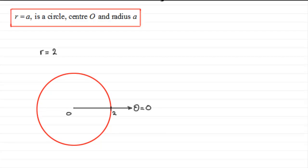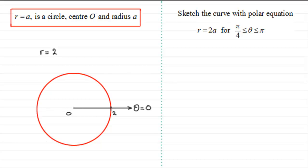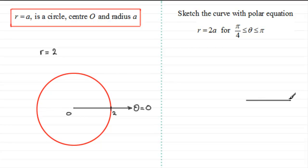The other curve you are likely to get is that of an arc. It's very similar to the equation of a circle, only it has a restricted domain for theta. Let's suppose we've got this question: sketch the curve with polar equation r equals 2a, for theta greater than or equal to pi upon four radians but less than or equal to pi radians.